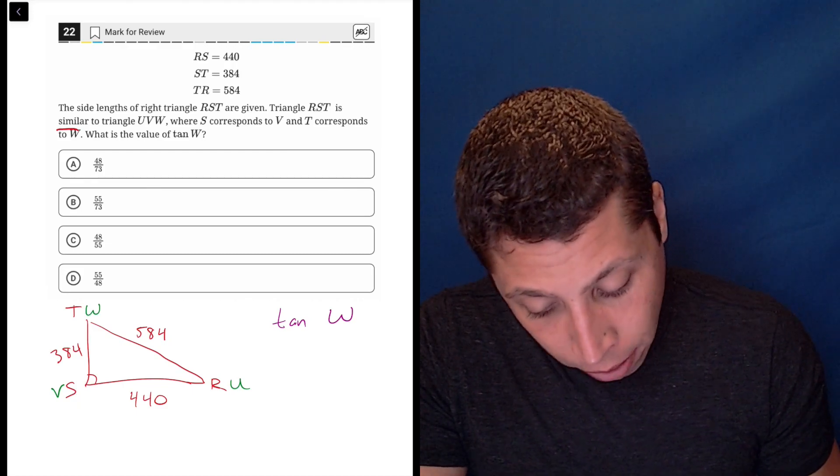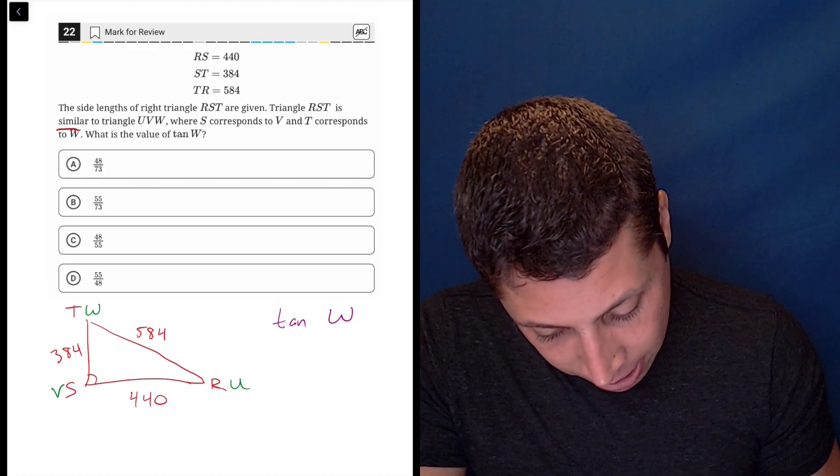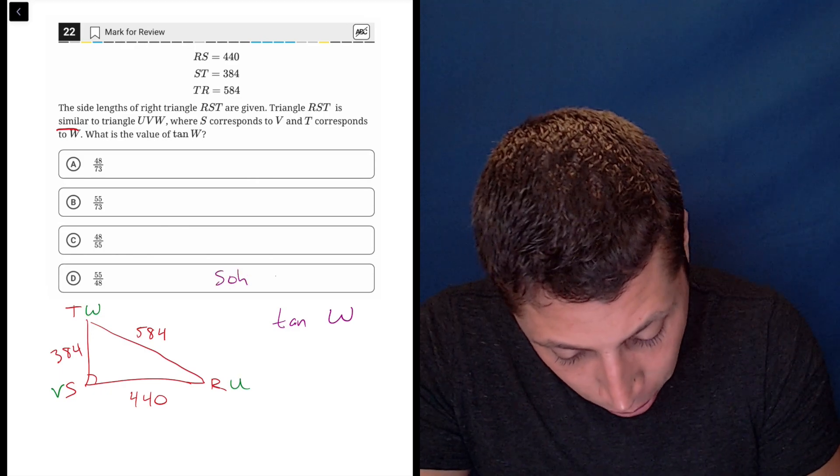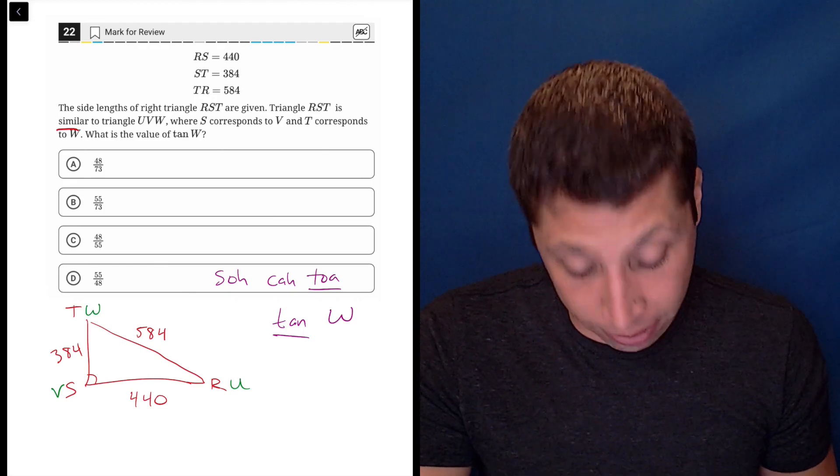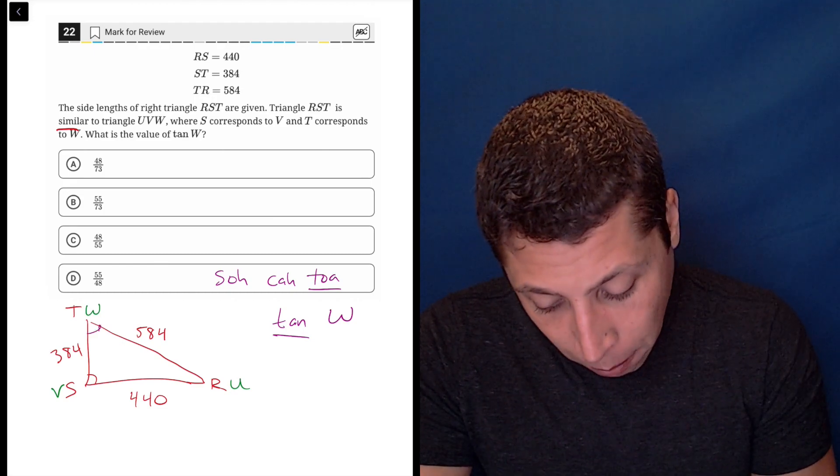We should probably write down that tangent is, if we do SOHCAHTOA, right? The tangent is the opposite side over the adjacent. So where's W, that's up here.